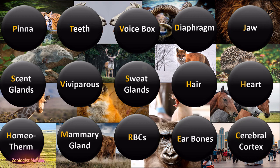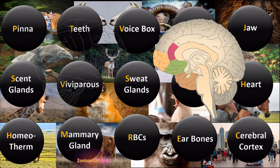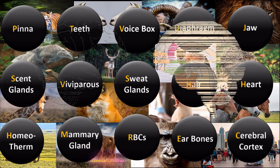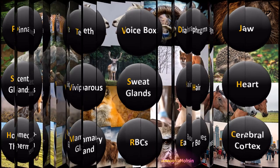The last feature is the cerebral cortex. The cerebral cortex, or cerebrum, of mammals is highly developed. You can see in the diagram that the upper portion — the cerebral cortex — is huge in proportion to body size compared to other animals. These are the 15 features which are very basic and easy to remember.